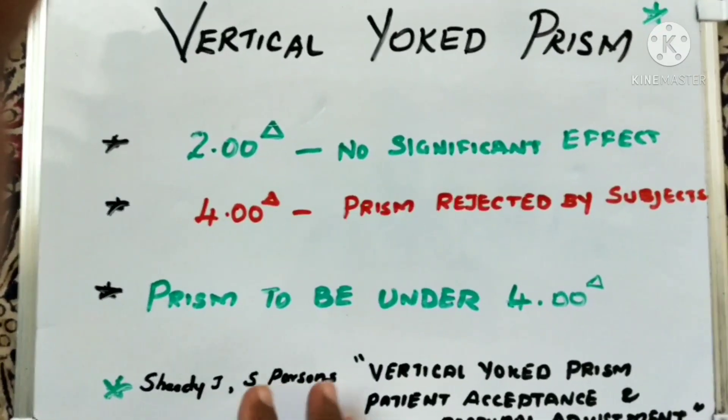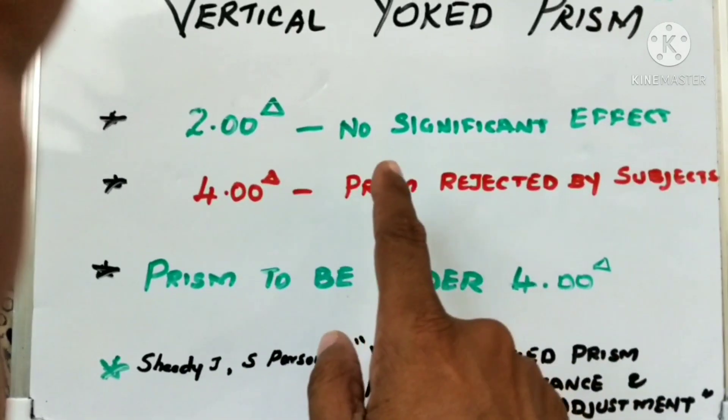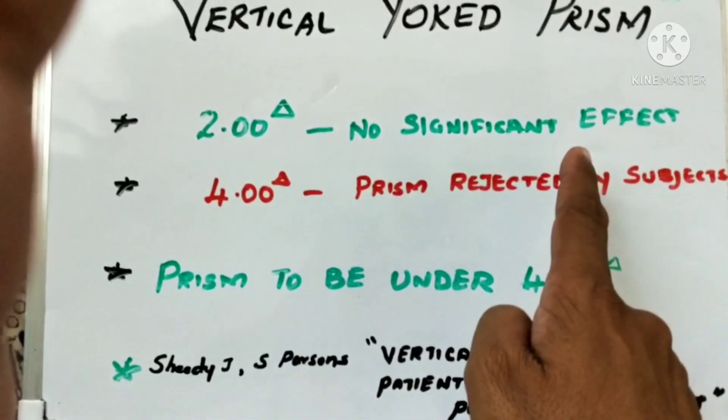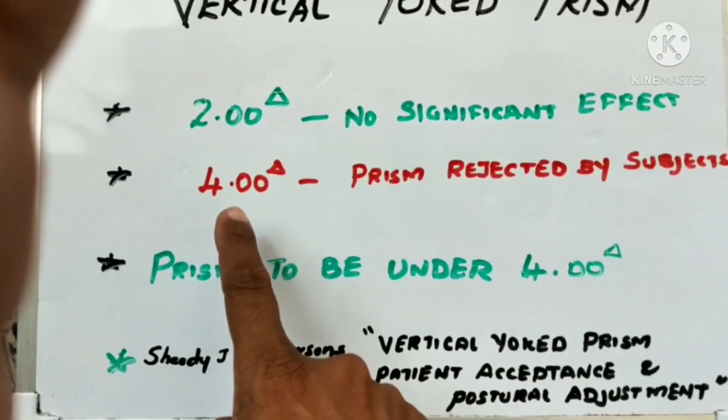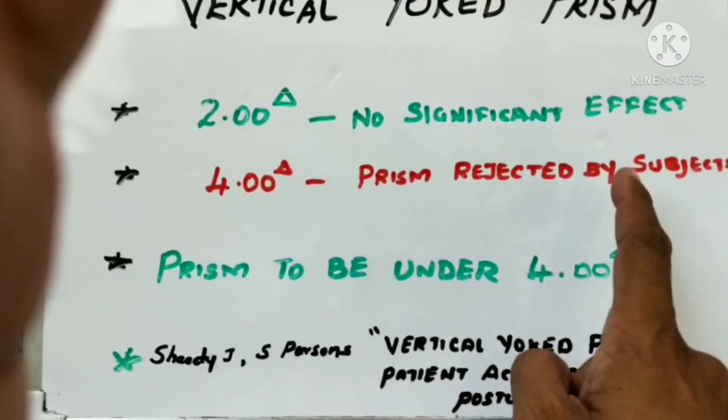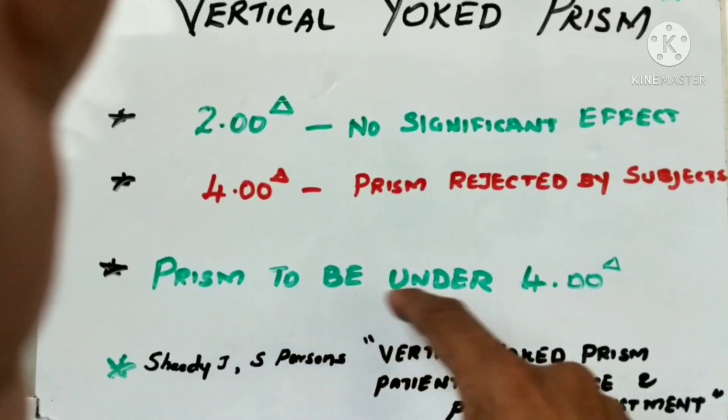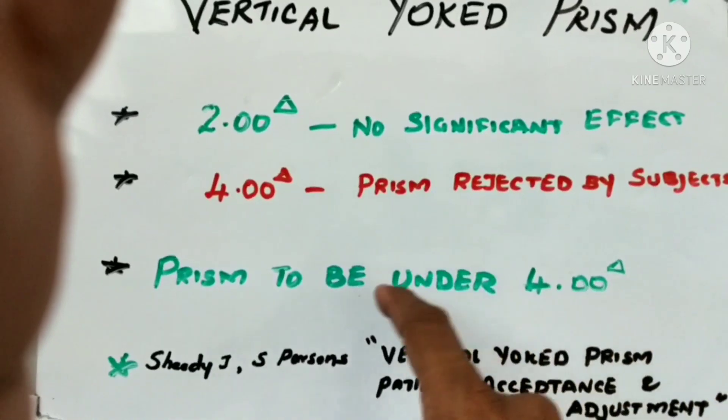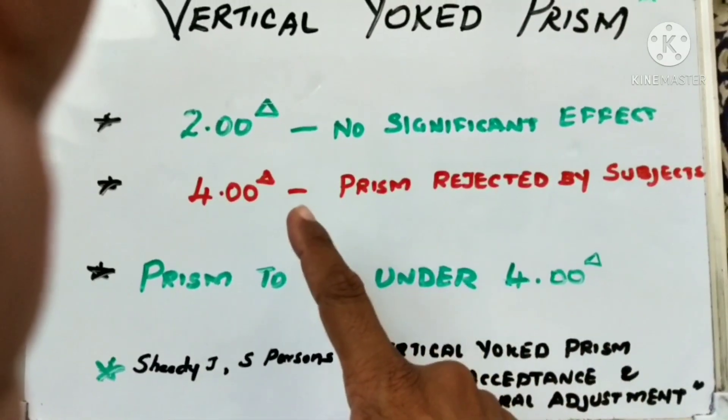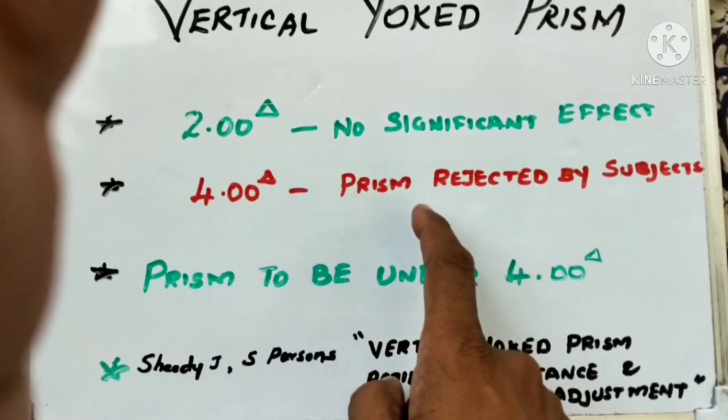There is a study done by Sheedy and Parsons on vertical yoke prism and patient acceptance and postural adjustment. I've given you the quick numbers: up to 2 diopters of prism there was no significant effect, but when the prism was 4 and above, the prism was rejected by every test subject in the study. So basically, there is a prism reference point on the progressive lens and we need to check that the prism has to be under 4 diopters. If the prism crosses this, it becomes out of tolerance. If there is an uneven prism difference between right and left lens which is more than 0.33 or say 0.5 diopter of prism,